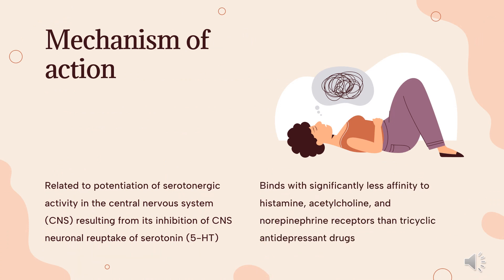Mechanism of Action: The mechanism of action of citalopram is unclear but is presumed to be related to potentiation of serotonergic activity in the central nervous system (CNS), resulting from its inhibition of CNS neuronal reuptake of serotonin (5-HT), potentially through inhibition of the serotonin transporter, solute carrier family 6 member 4 (SLC6A4). Citalopram binds with significantly less affinity to histamine, acetylcholine, and norepinephrine receptors than tricyclic antidepressant drugs.